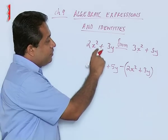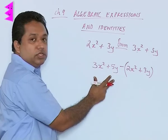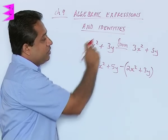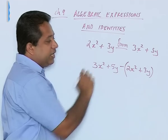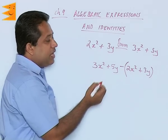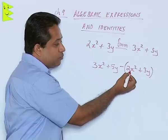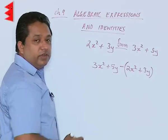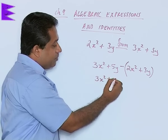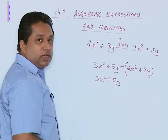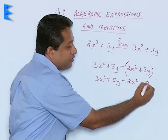Always remember: when a polynomial has to be subtracted from another polynomial, this will be written first, minus whatever is the first term — that will come inside brackets. We put it inside brackets because, unlike addition where we can simply add, in subtraction the signs will change. If it is plus, it will become minus, and if it is minus, it will become plus. So when we open the bracket, the first expression will remain as it is — there will be no change to that. But when we open the bracket, we get minus 2x square minus 3y.